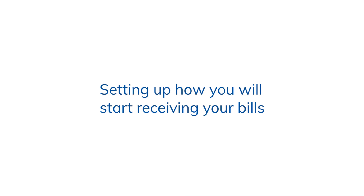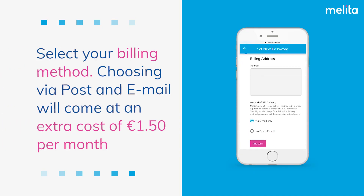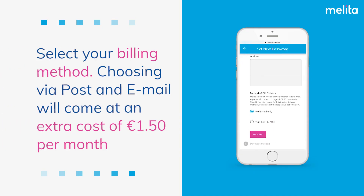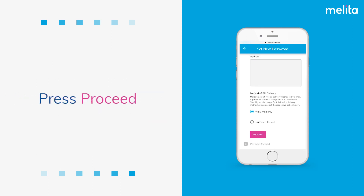Setting up how you will start receiving your bills. Select your billing method. Choose via post and email, which will come at an extra cost of €1.50 per month. Press Proceed.